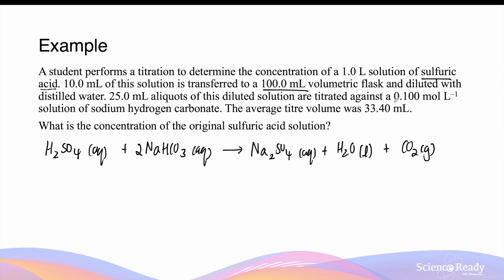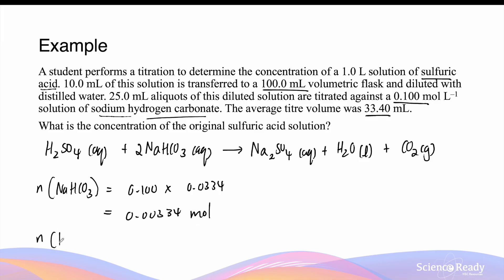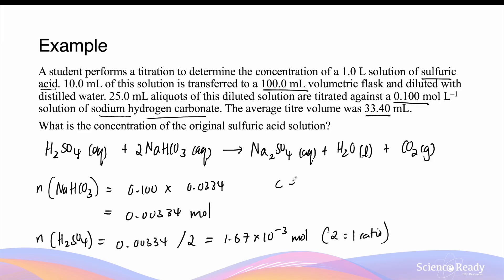The standard solution for this titration is 0.1 mol per litre of sodium hydrogen carbonate. The titrant — that is the chemical put into the burette — is the standard solution. So the average titrate volume of 33.4 mL refers to the sodium hydrogen carbonate. We can use its concentration and the titrate volume to calculate the moles of sodium hydrogen carbonate. The moles of sulfuric acid can then be worked out as exactly half — 1.67 × 10⁻³ moles — due to a 2 to 1 ratio. Using moles divided by the 25 mL aliquot volume (0.025 litres) gives 0.0668 mol per litre.